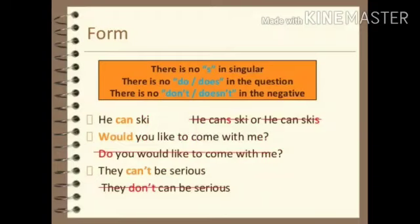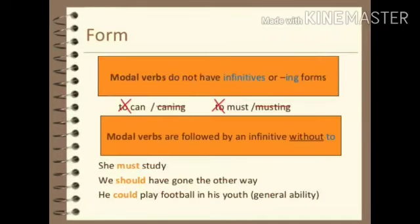Since we use the first form of the verb with modals, we cannot add 'S' when using a verb with singular subjects. For example, 'he can ski' is correct, but 'he can skis' is wrong. We also cannot use 'do' or 'don't', 'does' or 'doesn't' in questions or negative forms. For example, 'would you like to do your work?' is correct, but 'do you would like to do your work?' is incorrect.